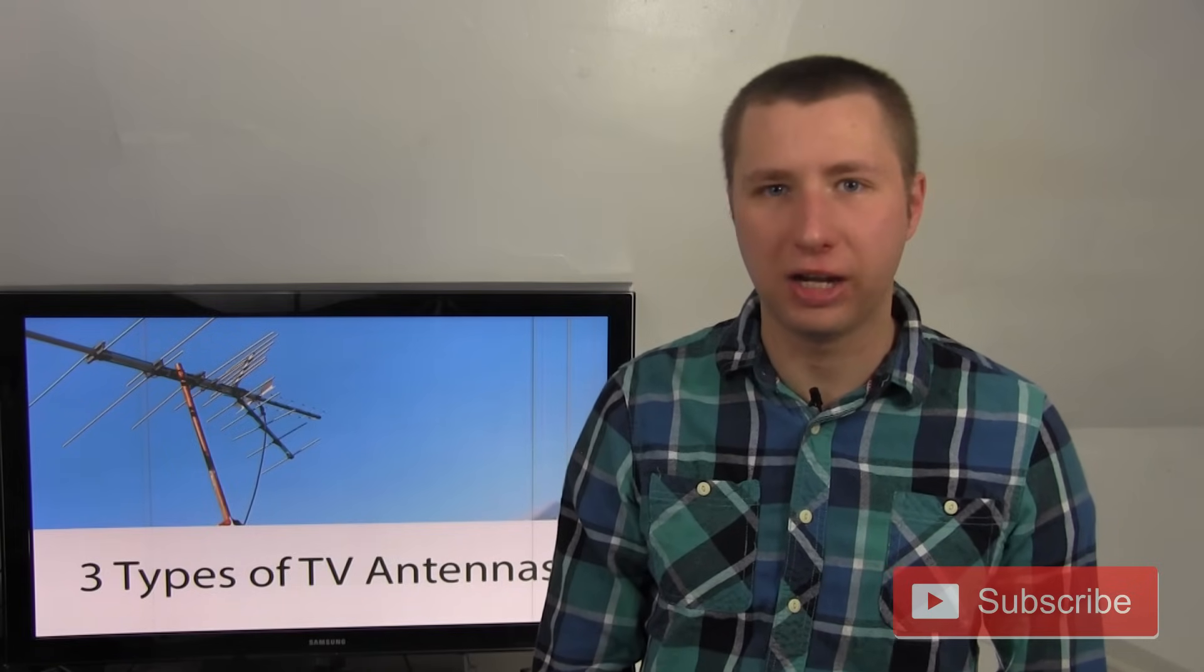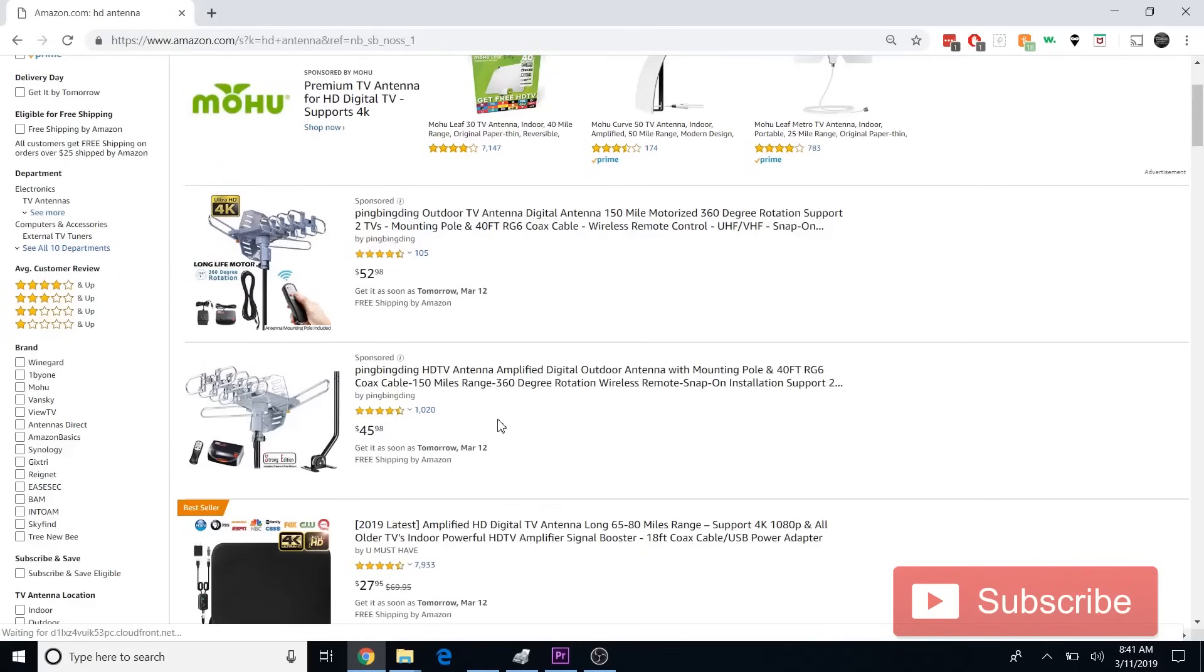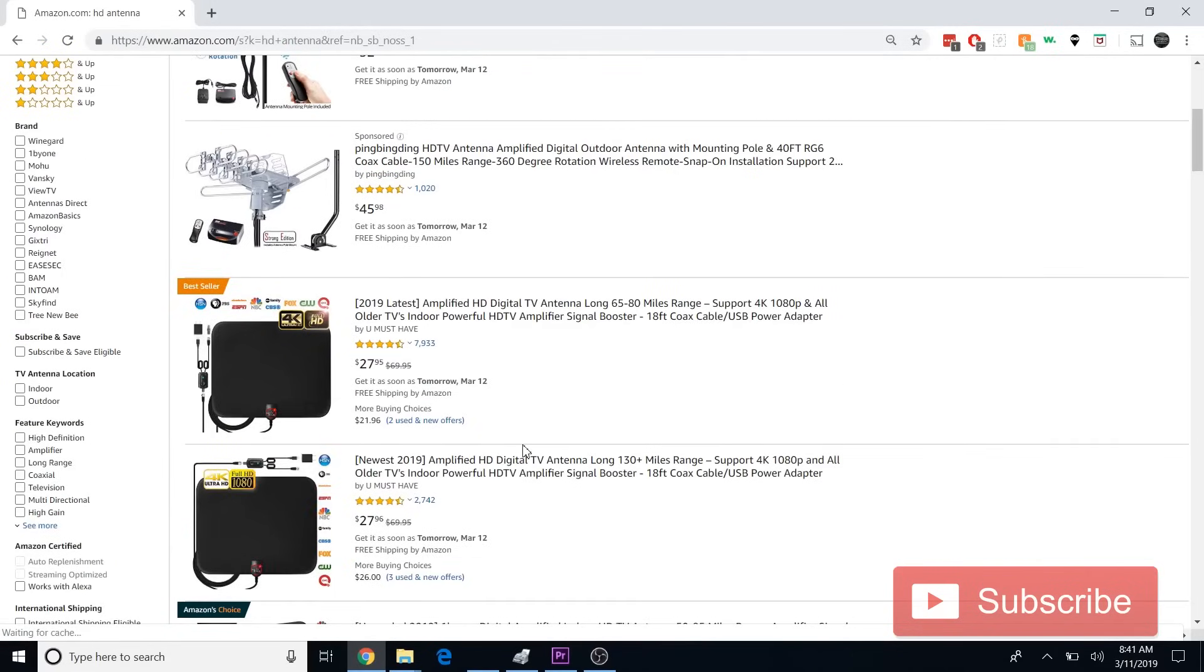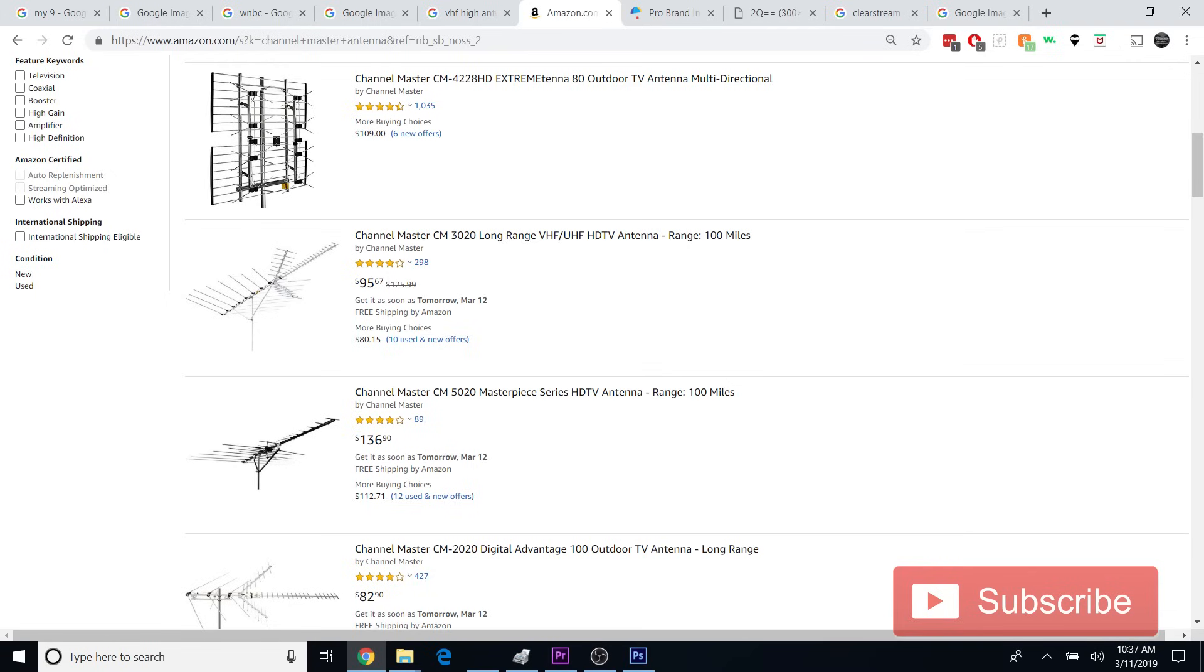First of all, there's no such thing as an HD antenna. So if you're looking up on Amazon HD antenna, you're just going to get a bunch of cheap models that are marketed with the term HD that will show up prior to more durable models from Channel Master and Winegard.